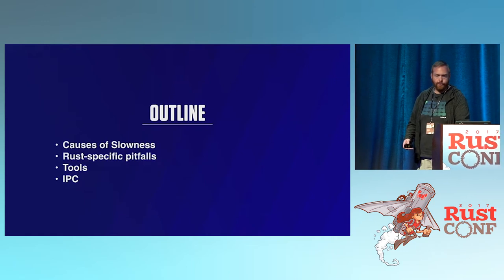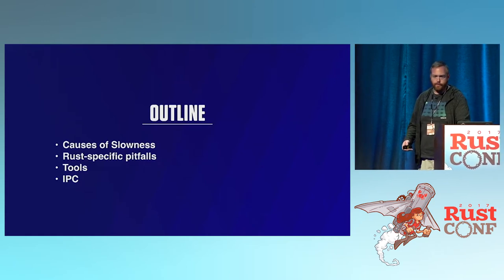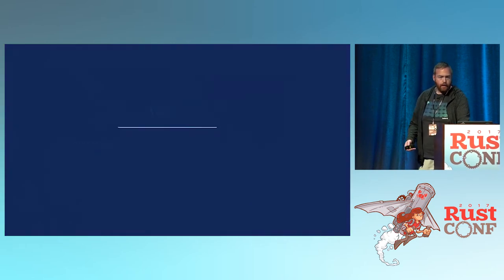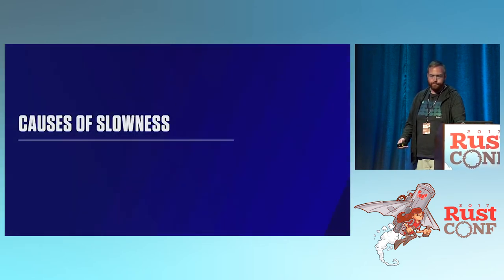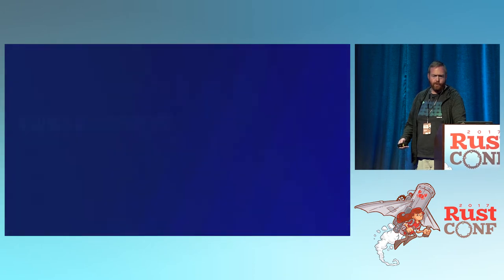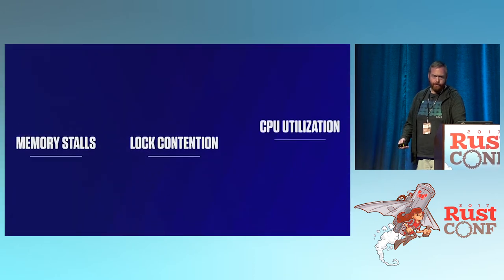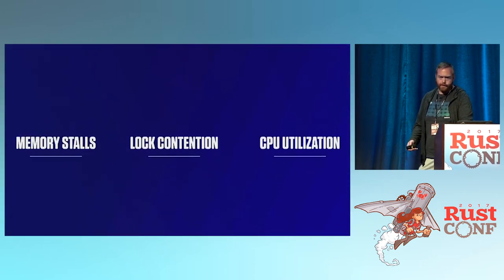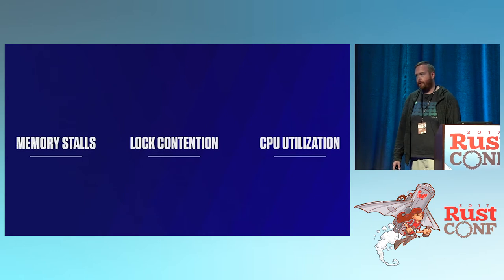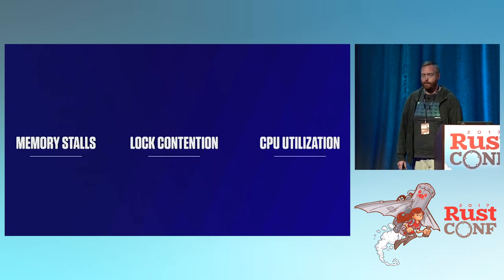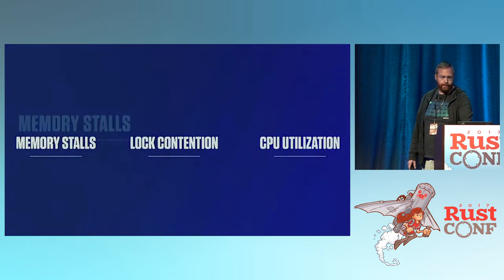Here's the outline I'll talk about: first, some causes of slowness in your programs, some Rust-specific pitfalls, tools, and then a great measurement called IPC. In native programs, there are generally three causes of performance problems: memory stalls, which is essentially talking to DRAM, lock contention, and CPU utilization.